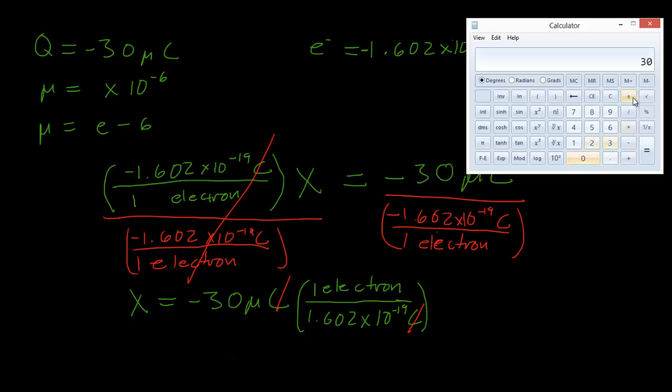So we'll do negative 30, and the Windows calculator has an exp button. And remember micro is negative 6. And we're going to divide by 1.602, it's negative. And its exponent is times 10 to the negative 19th. So we'll enter 19 negative.